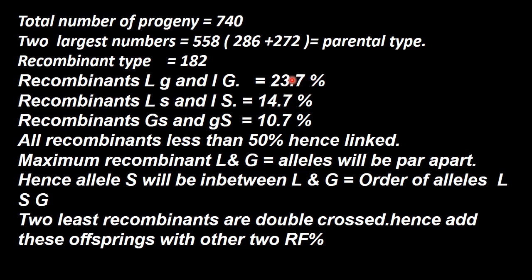What is the difference? Why do these differences come? This is because of double crossing over. The two least recombinants are double crossovers. Hence, adding these two offspring — 4 and 2 (that is 4 plus 4, 2 plus 2) — to the other recombinant frequency, we will get exactly 25.4.